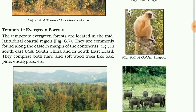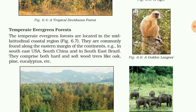The temperate evergreen forests are located in the mid-latitudinal coastal regions. They are commonly found along the eastern margin of the continents, such as in the USA, South China, and South East Brazil. They comprise both hard and softwood trees, like oak, pine, and eucalyptus.